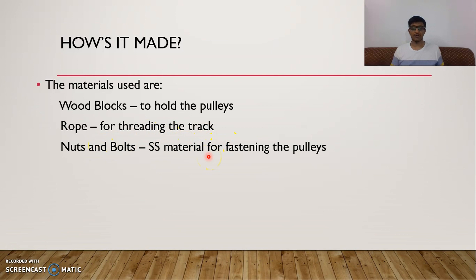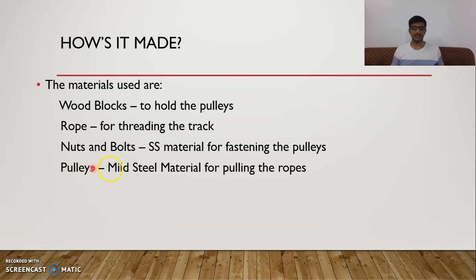Nuts and bolts: every engineer cannot do their work without nuts and bolts. In our project we use nuts and bolts to hold the pulleys intact with the wooden blocks and for clamping the curtains to the rope. Then we used pulleys made of mild steel material — the pulleys are the wheels. These wheels along with the rope are made of mild steel instead of stainless steel or iron, because iron tends to get corroded even with paint, and there is a lot of wear and tear. So we are using mild steel for better usage.